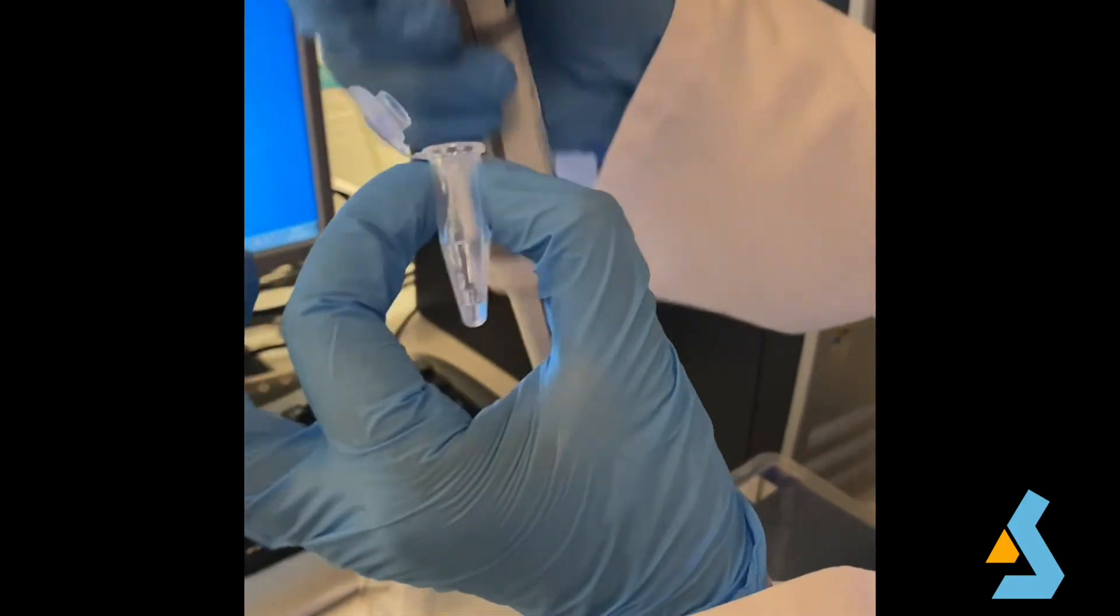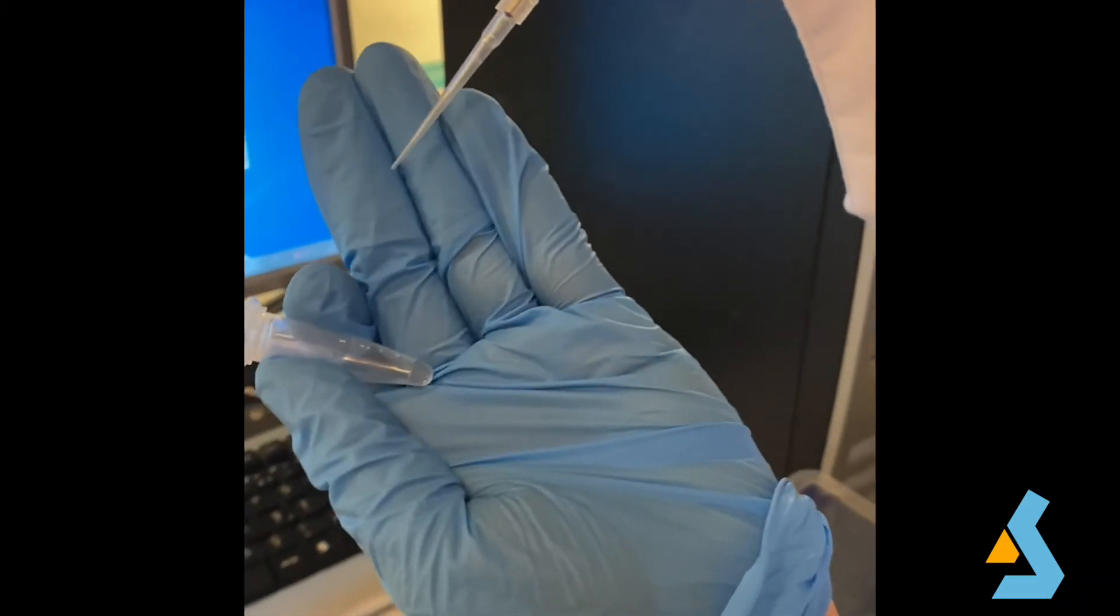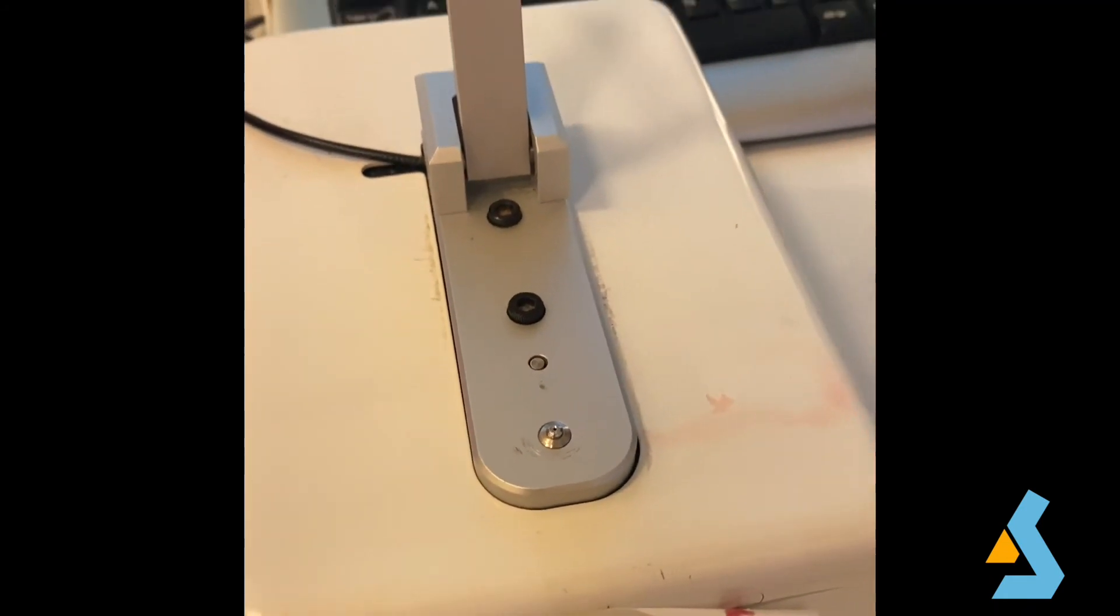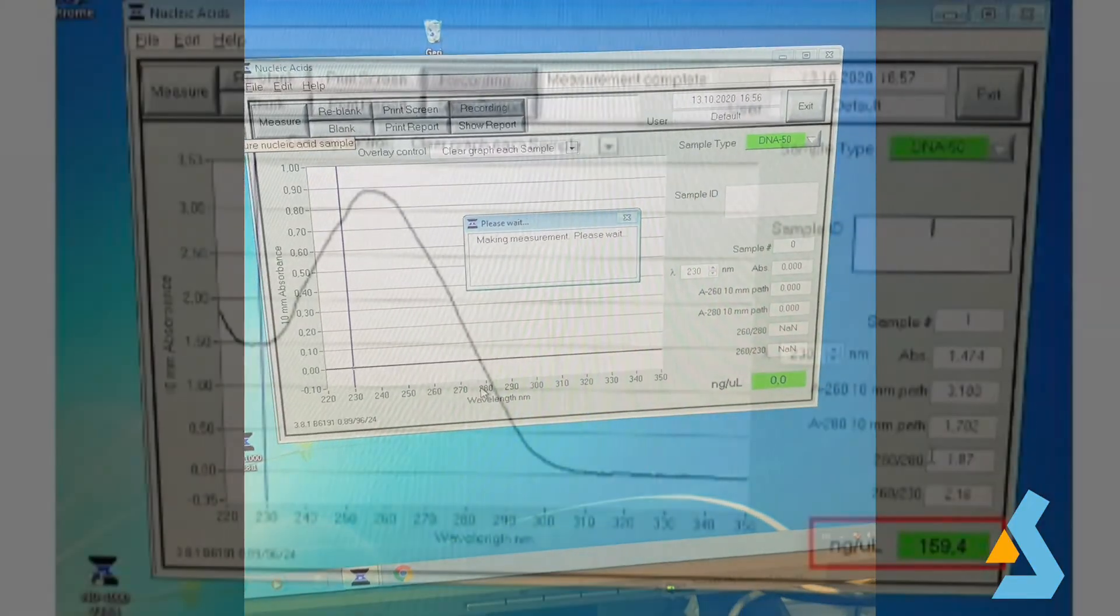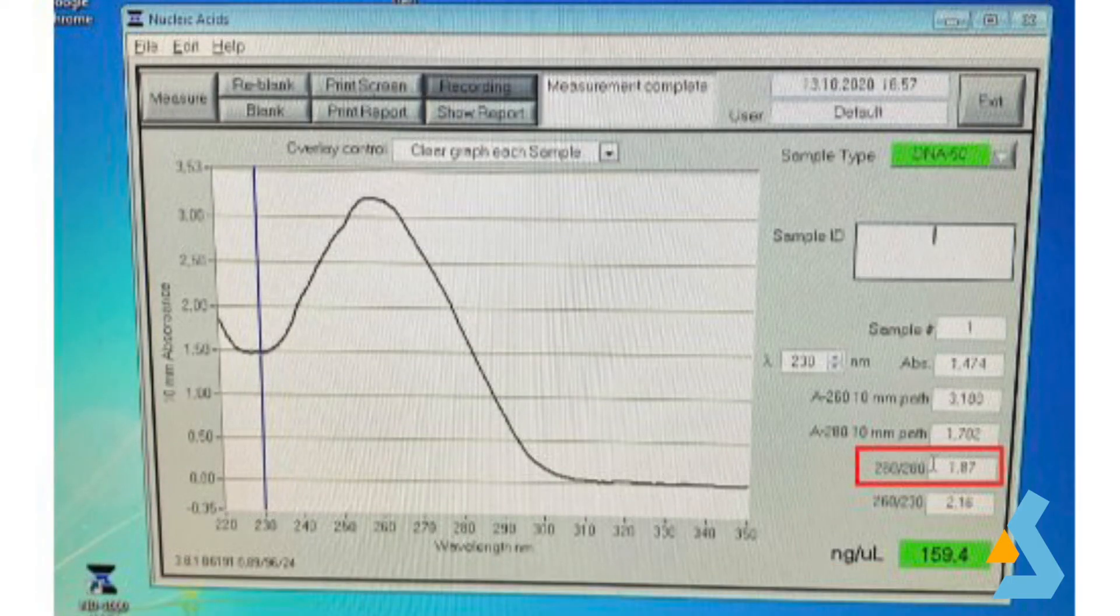After taking a blank, we can start measuring our sample. Just as for blank, we should take 1 microliter of the sample and put it onto the lower pedestal. This time, we should click the measure part of the software. After measurement, the software will give us the concentration and also the purity parameters for our plasmid DNA. In this case, there are two values we need to pay attention. The first one is 260 to 280 ratio. The ratio is used to assess the purity of DNA and RNA. A ratio between 1.8 and 2 is generally accepted as pure for DNA or RNA. If the ratio is appreciably lower than expected, it can indicate the presence of protein, phenol, or other contaminants.